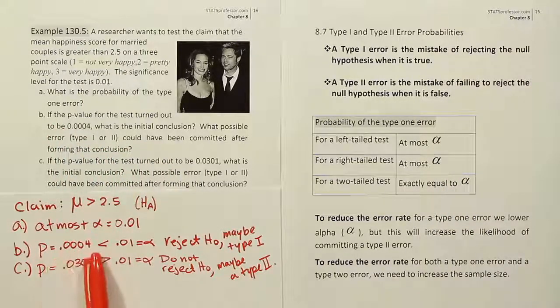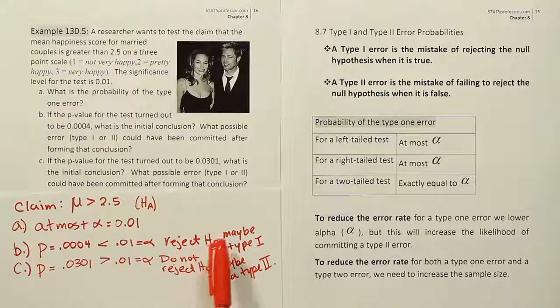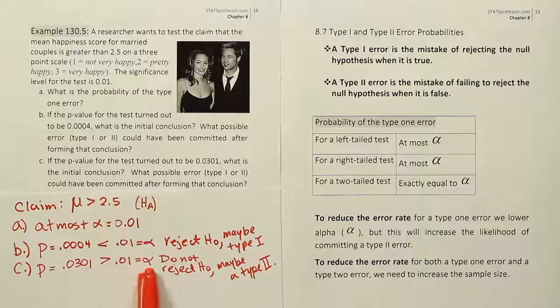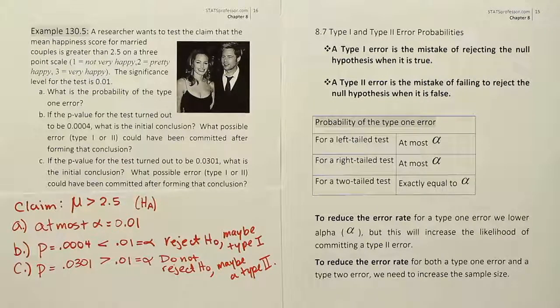Whenever you reject, you might commit the type 1. In the last case, the p-value is larger than alpha. Large p-values make us not reject the null hypothesis. And that means maybe it's a type 2. Because whenever you don't reject, you might commit the type 2 error.